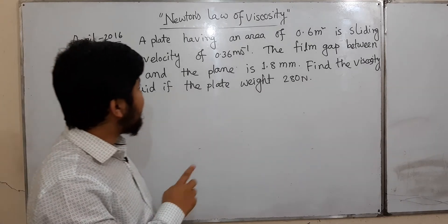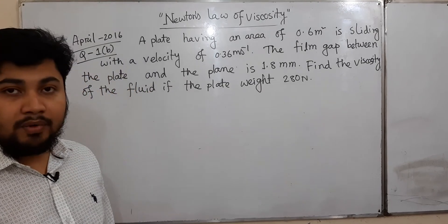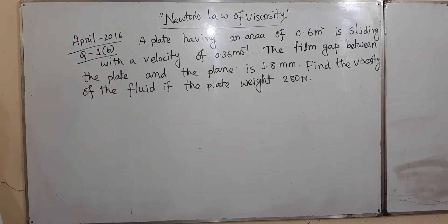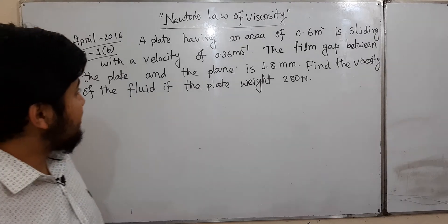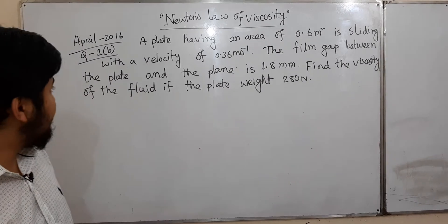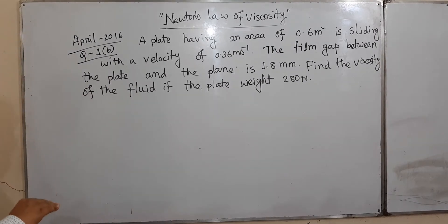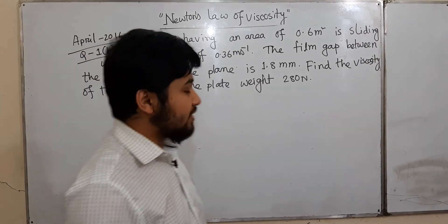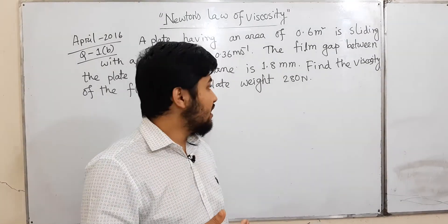A plate having an area of 0.6 square meters is sliding with a velocity of 0.36 meters per second. The gap between the plate and the plane is 1.8 millimeters. Find the viscosity of the fluid if the plate weight is 280 Newtons.